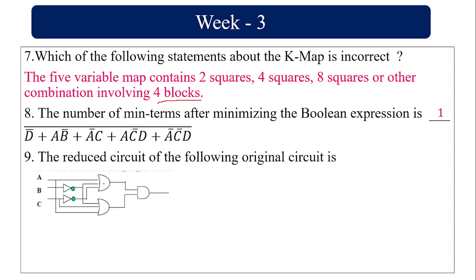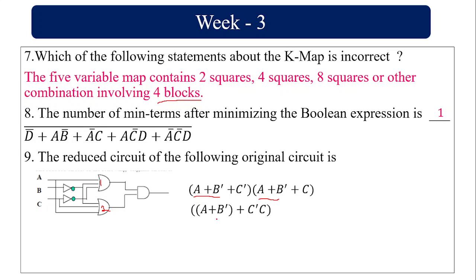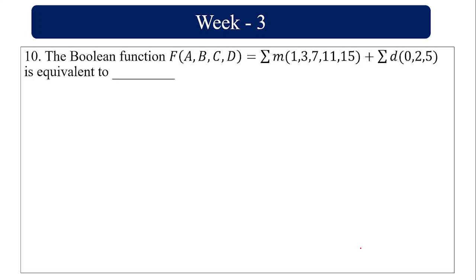For the reduced circuit: two OR gates and one AND gate are given. The first OR gate has inputs A, B̄, C̄, giving R1 = A + B̄ + C̄. The second OR gate has inputs A, B̄, C, giving R2 = A + B̄ + C. The AND of both: (A + B̄ + C̄)(A + B̄ + C). Taking A + B̄ common, C·C̄ = 0, so the result simplifies to A + B̄.